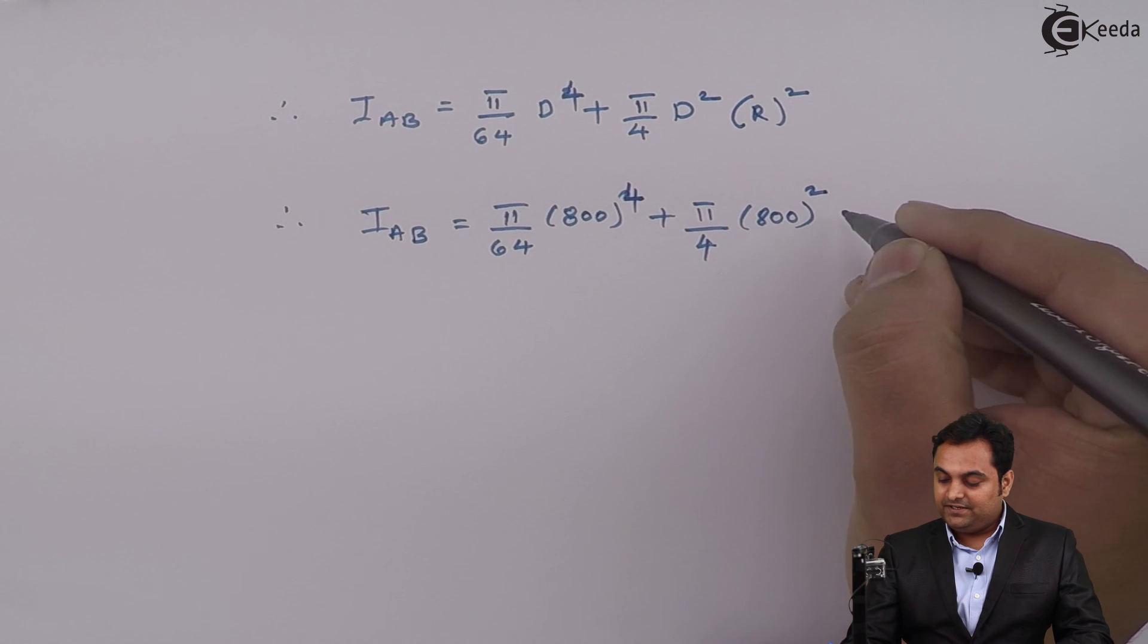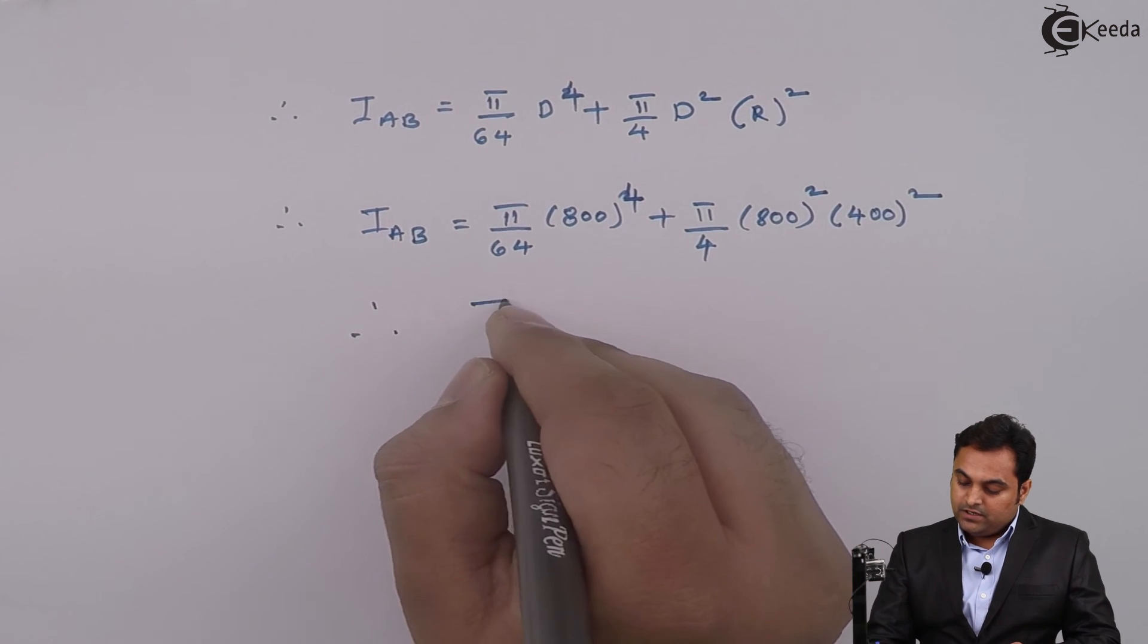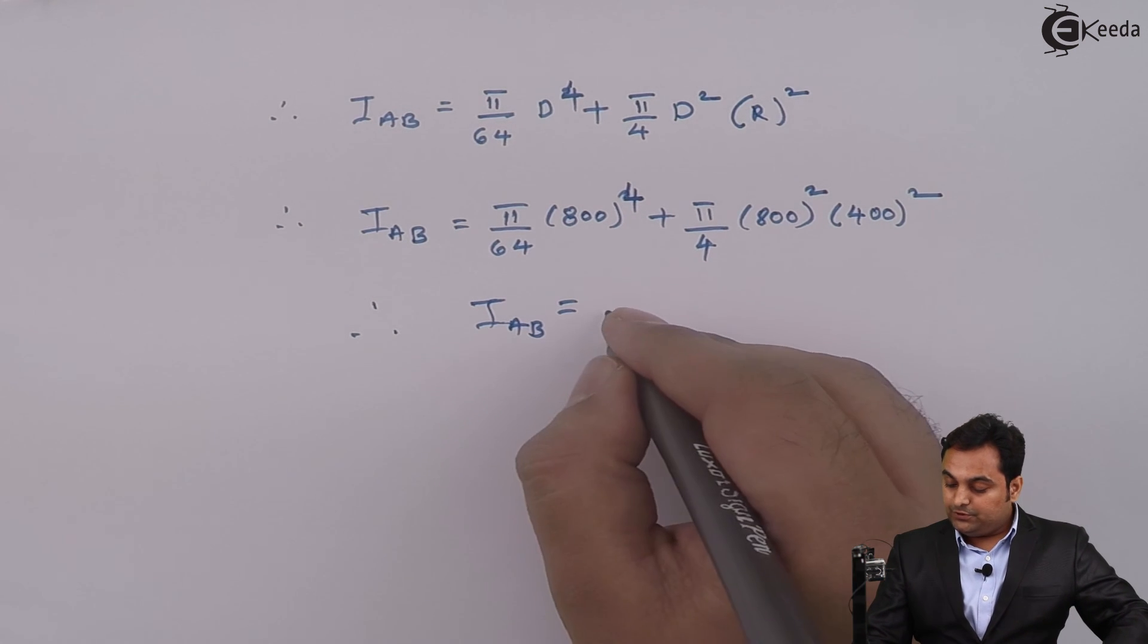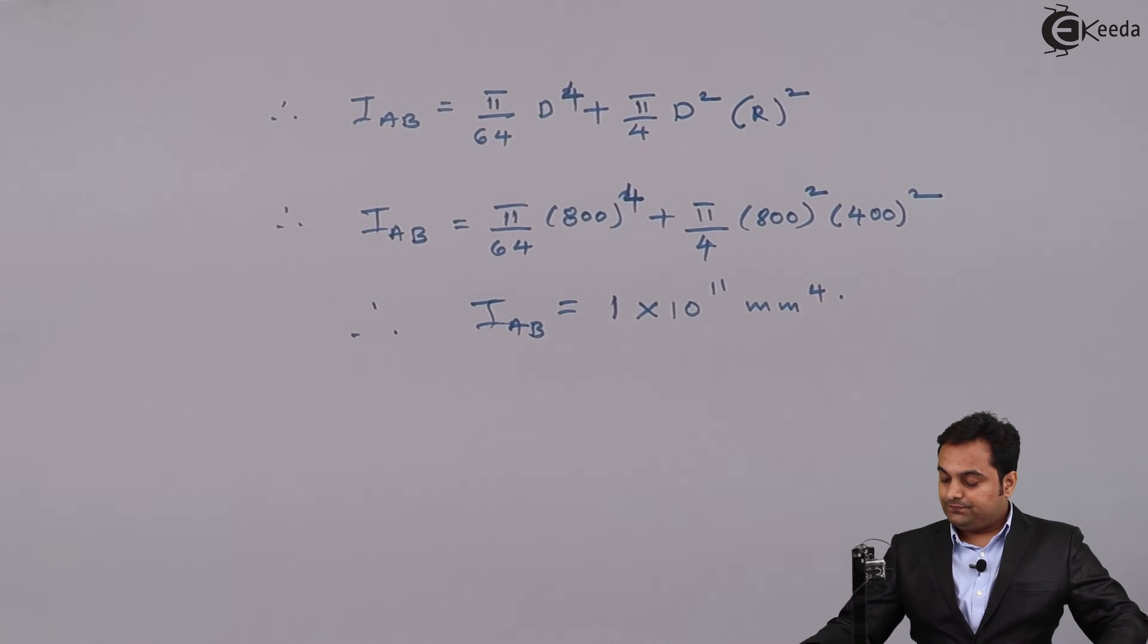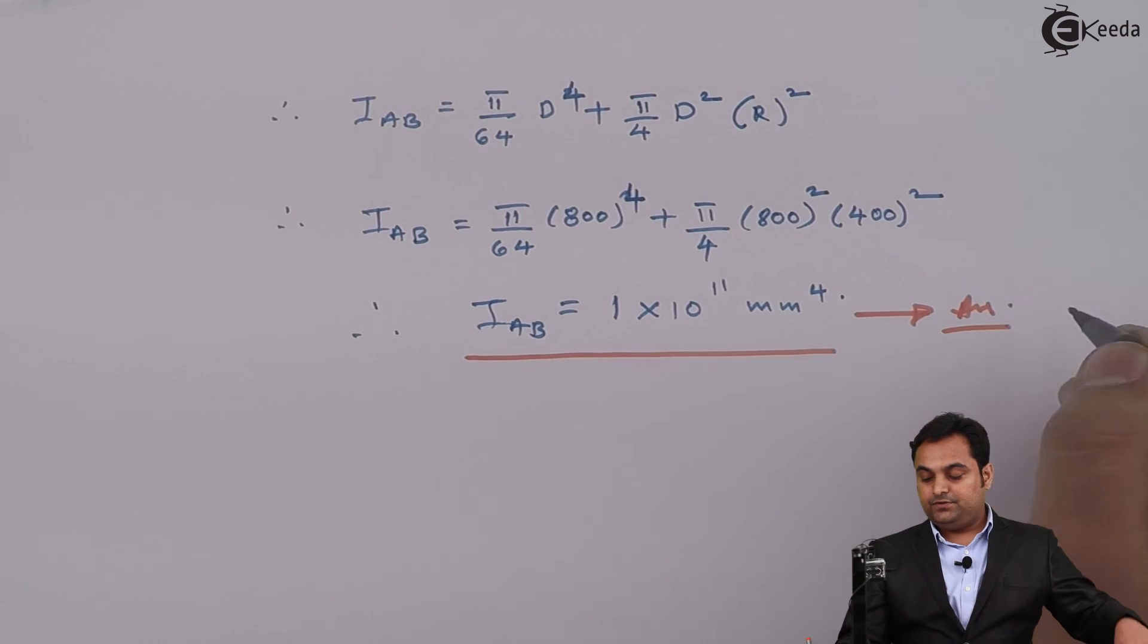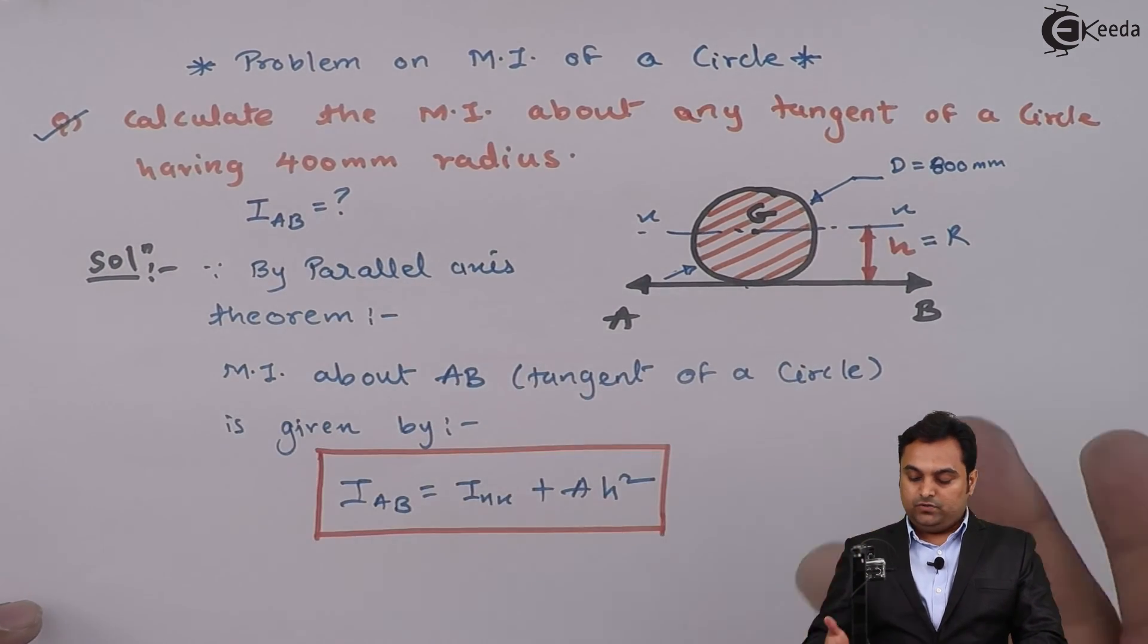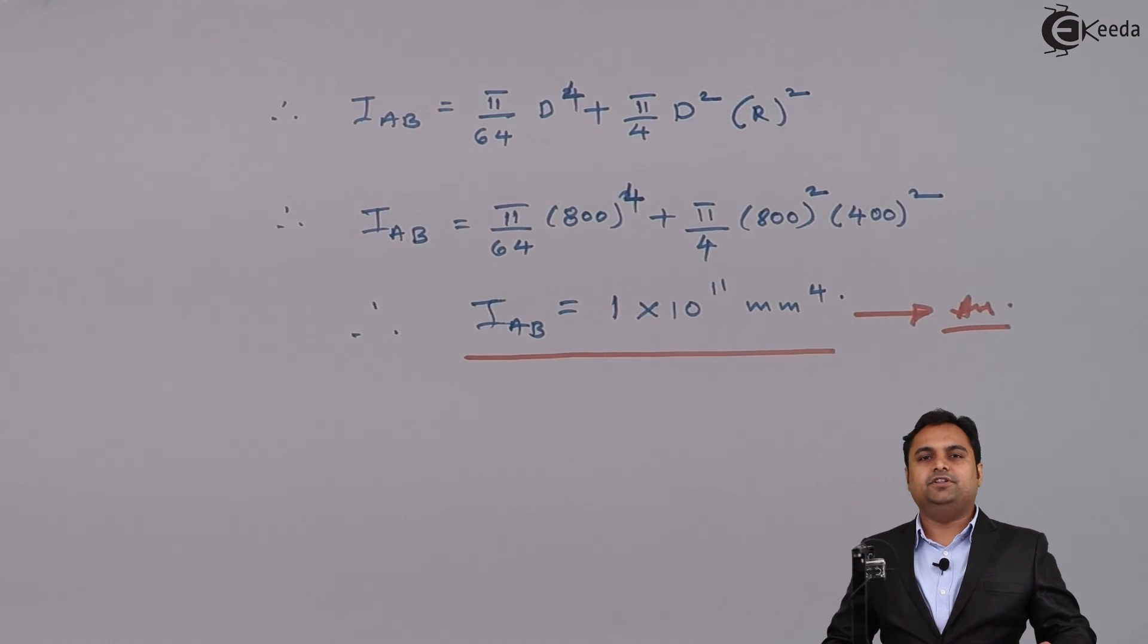Radius is 400, so it is h square, and finally I_AB the value comes out to be 1 × 10^11 mm raised to 4. So this is the answer. So as we have seen, when they were asking to calculate the MI about any tangent of a circle which was given, we have found out the answer, and with this we complete the question.